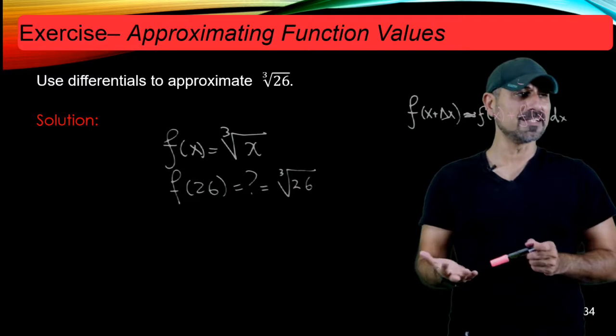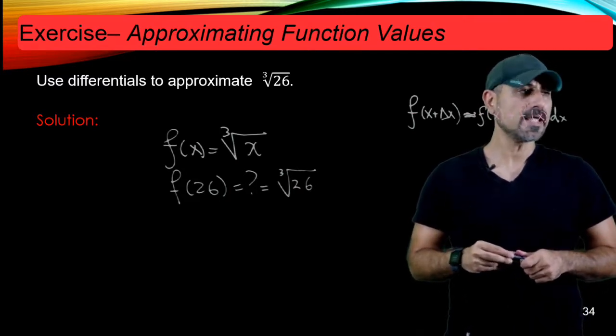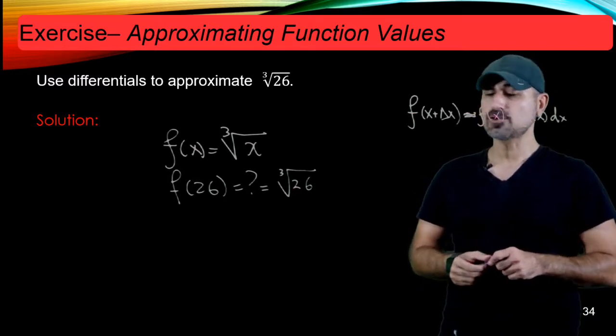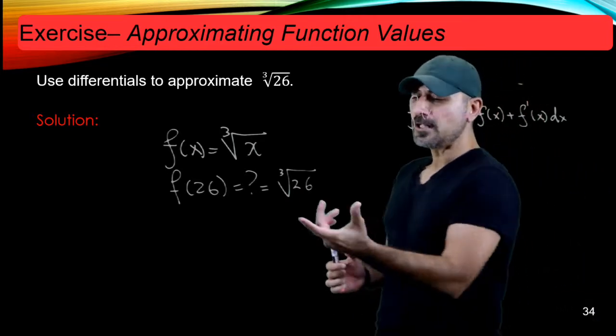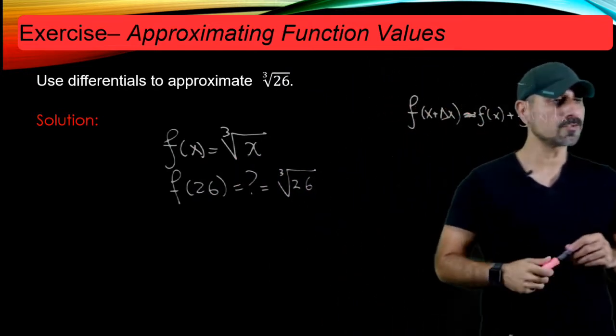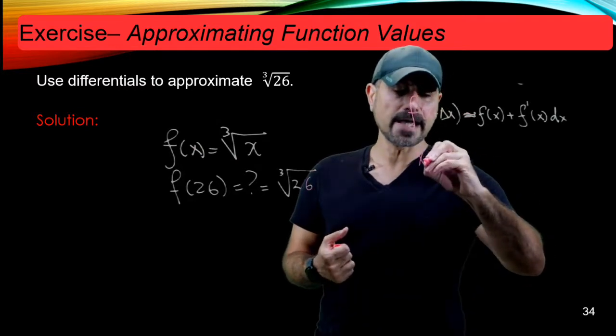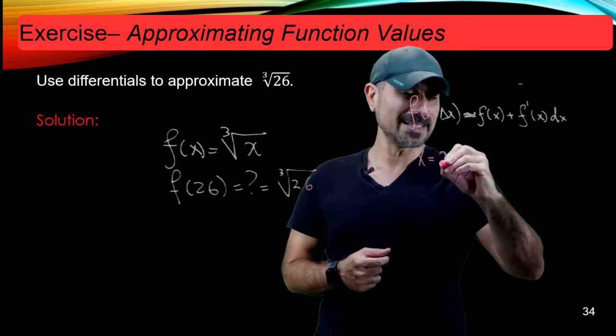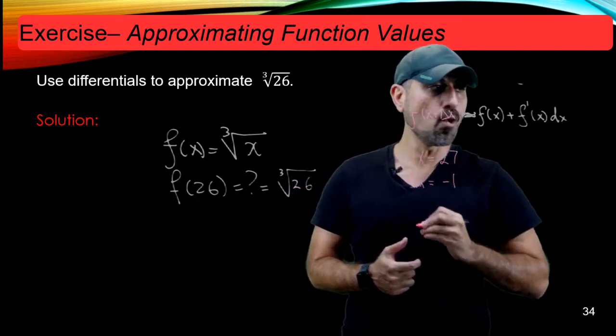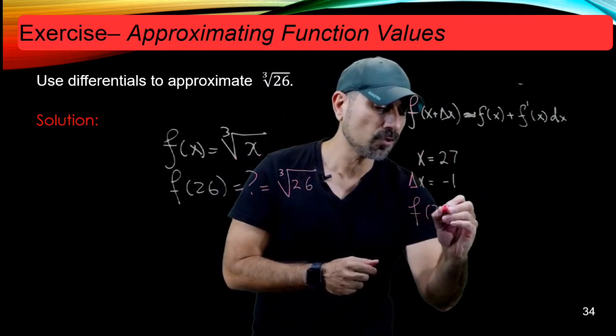Well, if this number was 27, we know how to take the cubic root of that without using a calculator, because 27 is the cubic power of 3, and that would give us 3. So the value we're after should be a little less than 3. So why don't I choose x in this formula to be 27, and delta x to be negative 1, so that f of x plus delta x is going to be f of 26.